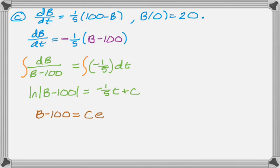What I like to do with the natural log problems is I like to exponentiate before I solve for C. So B minus 100 equals C times E to the negative 1/5 T. And then that coefficient C is what's going to deal with the absolute value issue. So if it was meant to be positive, it'll be positive. If it was meant to be negative, it'll be negative, and we don't have to worry.